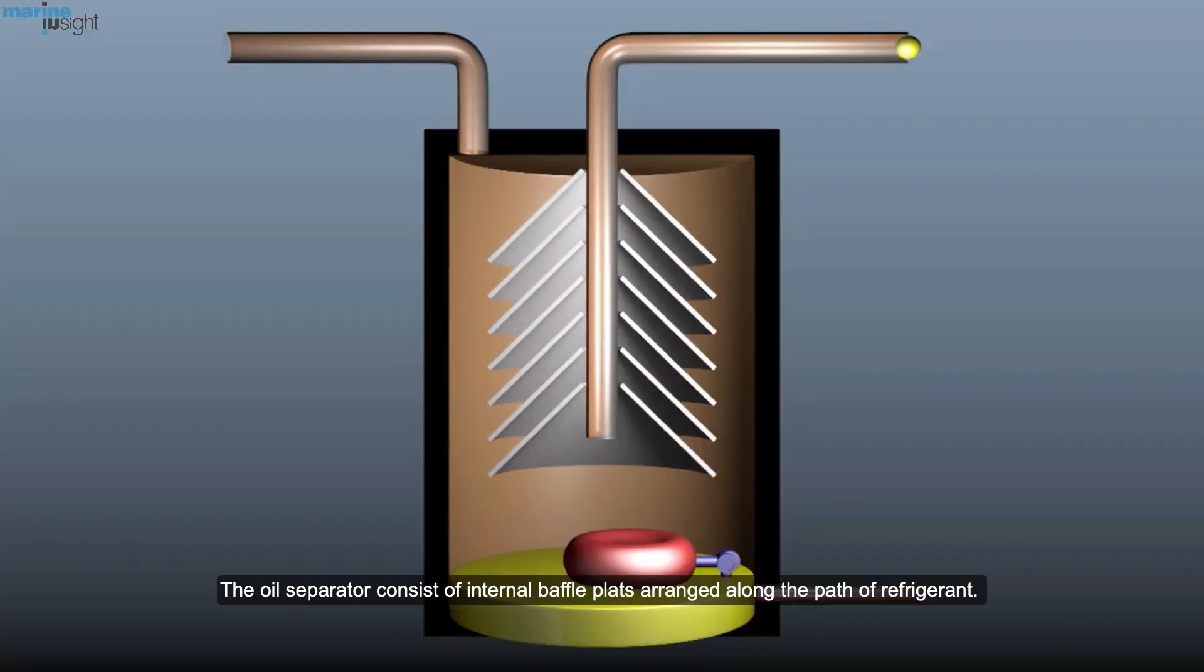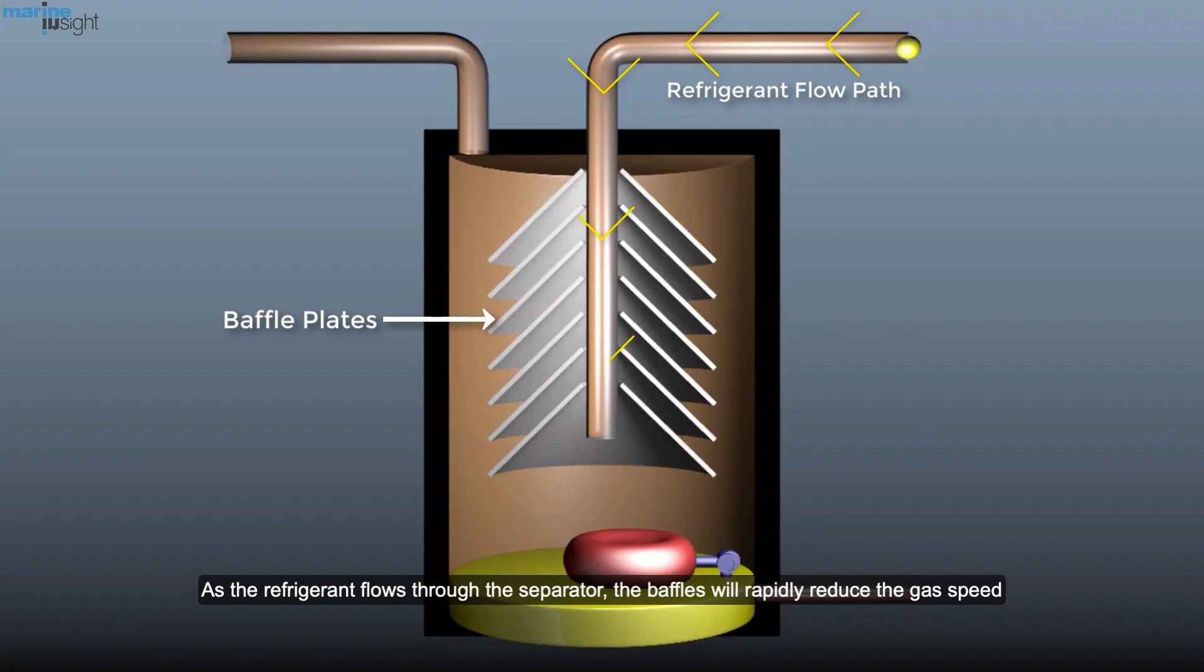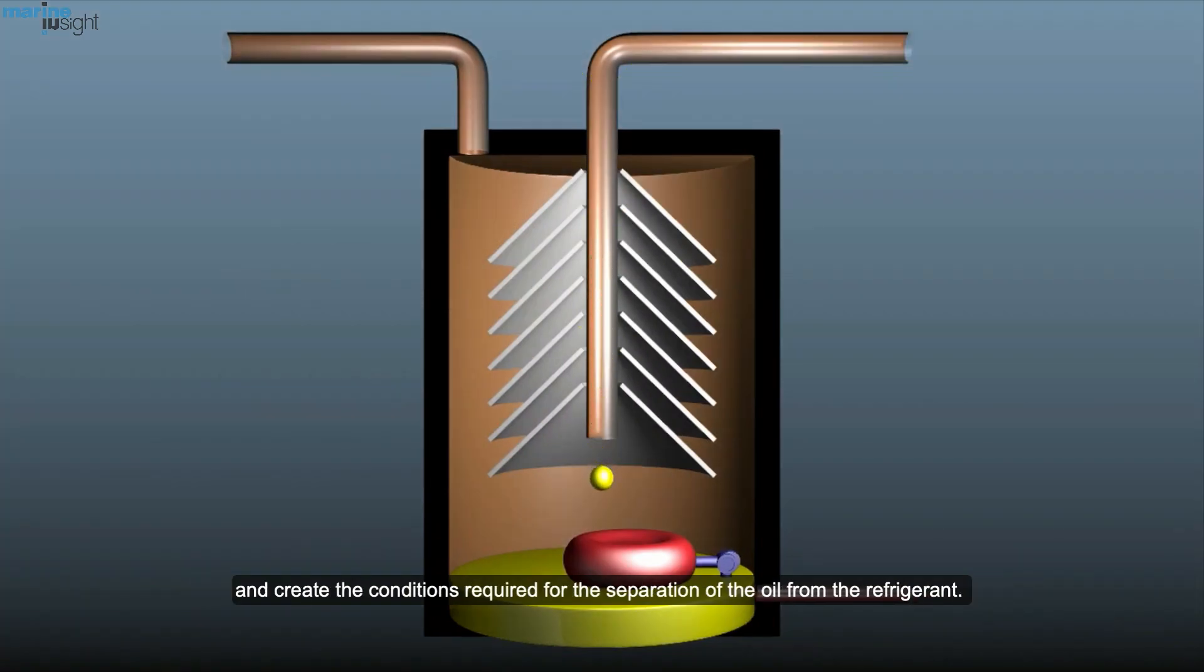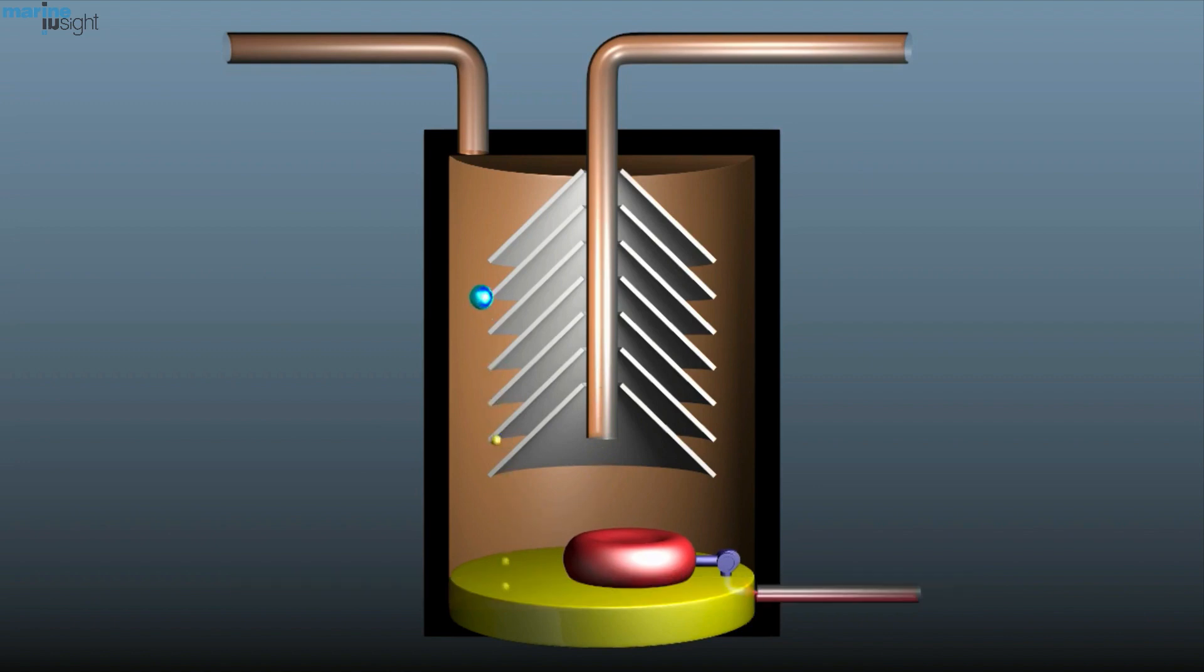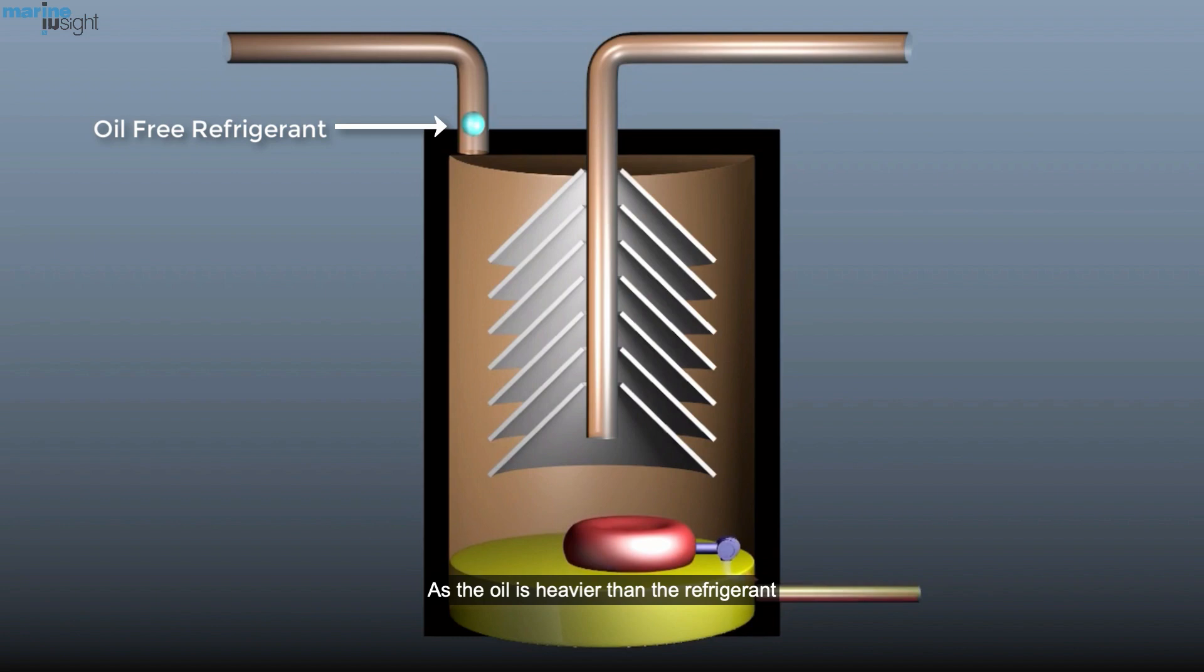The oil separator consists of internal baffle plates arranged along the path of refrigerant. As the refrigerant flows through the separator, the baffles will rapidly reduce the gas speed and create the conditions required for the separation of the oil from the refrigerant. As the oil is heavier than the refrigerant, it gets collected at the bottom of the separator.